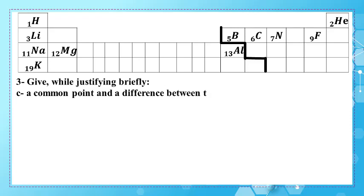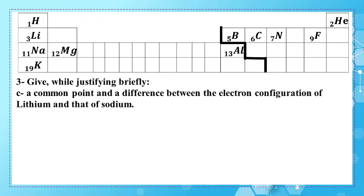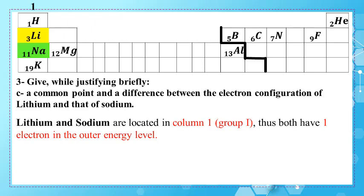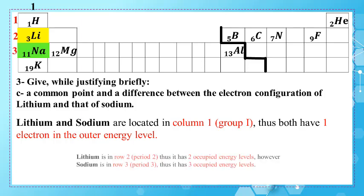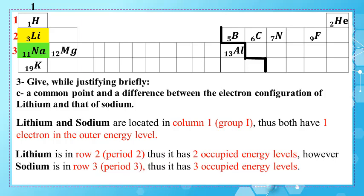Give while justifying a common point and the difference between the electron configuration of lithium and that of sodium. Lithium and sodium belong to column one, or group one, in the periodic table; thus both have one electron in their outer energy level. Lithium belongs to row two, so it has two occupied energy levels. However, sodium is in row three, so it has three occupied energy levels.